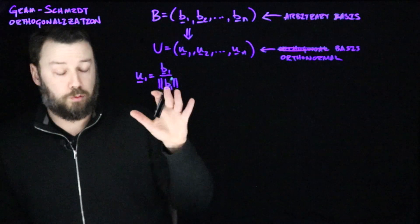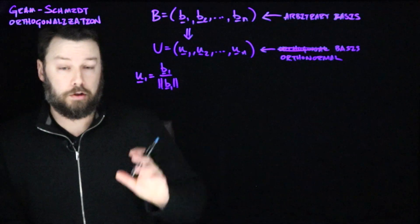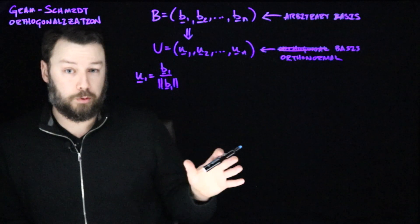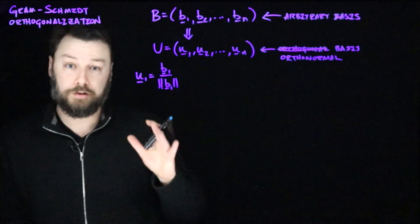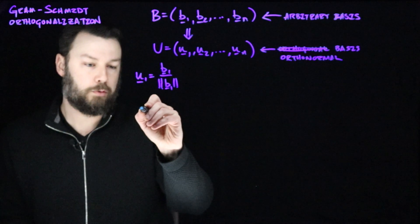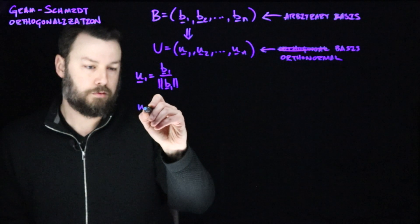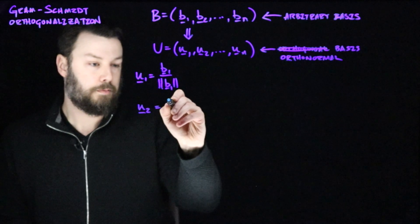The way we proceed with every additional vector that we want to add to this is we project out all of the u's that we've made so far. So we kind of remove those from the current b and then we normalize it. Let's think through how that would work for u2. So how would we generate u2? Well, we would start by taking b2.